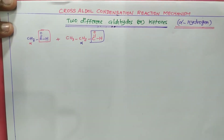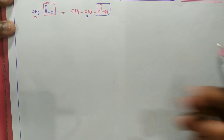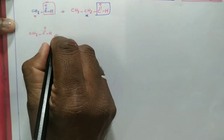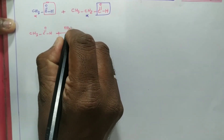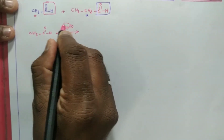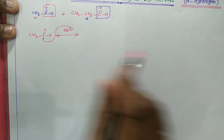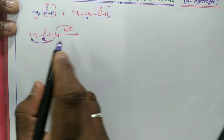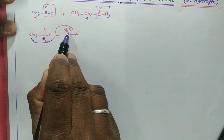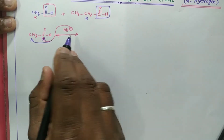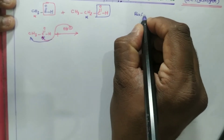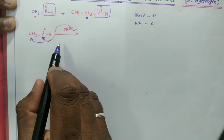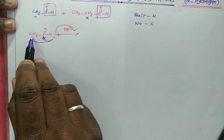Now let's get into the mechanism. Taking CH₃CHO, if this molecule reacts with a base — OH⁻ — the OH⁻ does not attack the carbonyl carbon. It will not act as a nucleophile here. In organic chemistry, a base always attacks hydrogen while a nucleophile attacks carbon. Here the OH⁻ acts as a base and attacks the alpha carbon's hydrogen.